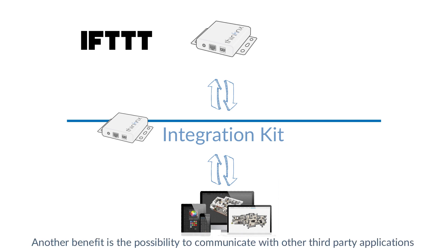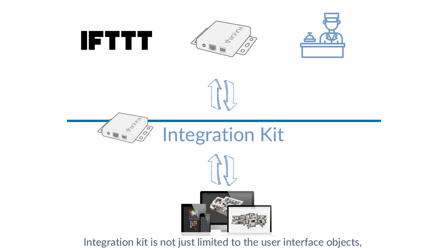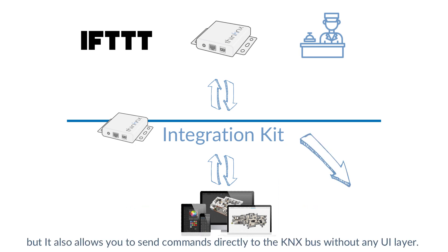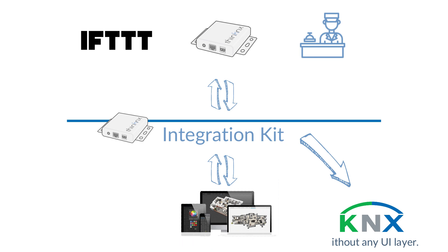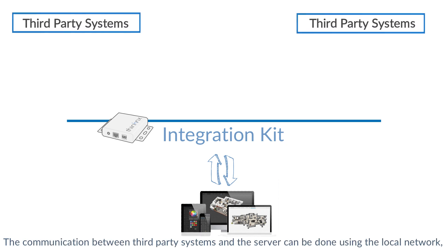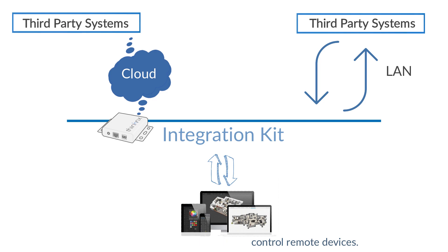Another benefit is the possibility to communicate with other third-party applications such as hotel management. Integration kit is not just limited to the user interface objects, but it also allows you to send commands directly to the KNX bus without any UI layer. The communication between third-party systems and the server can be done using the local network, or using Thinconnex cloud to reach and control remote devices.